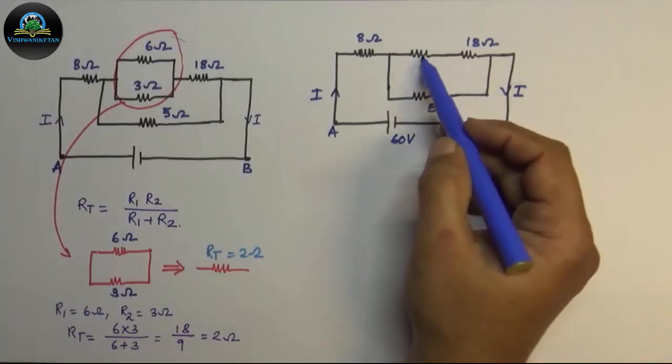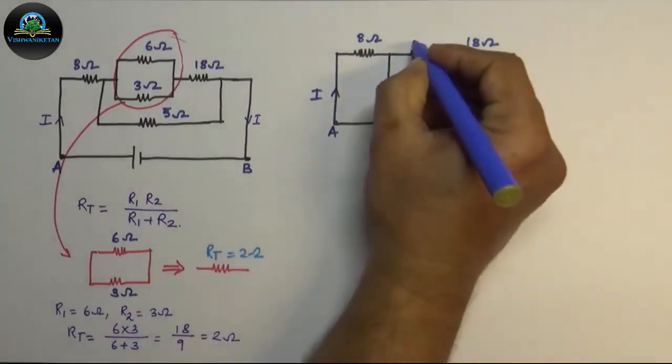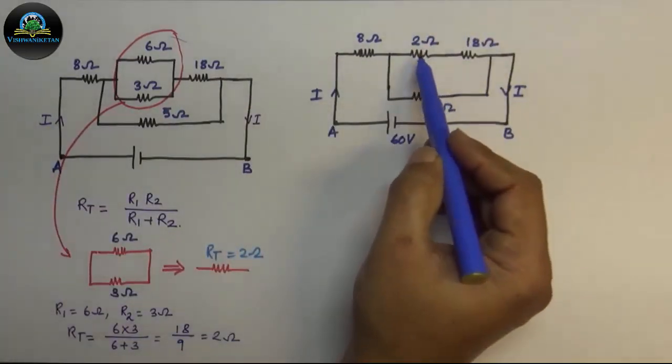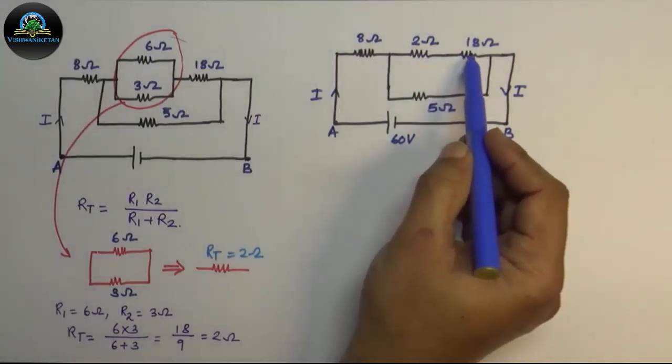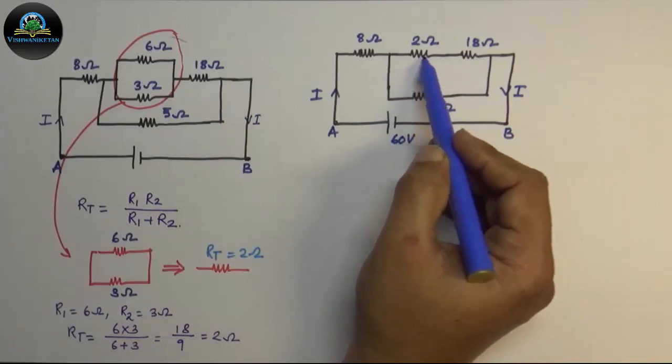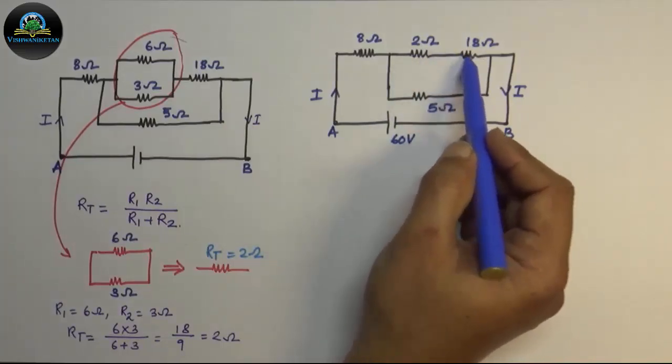Now this is our converted resistance of the parallel combination of 6 and 3, which is 2 ohm. Now further, the 2 ohm resistor and 18 ohm resistor are connected in series, as the current between these two resistances will be the same.